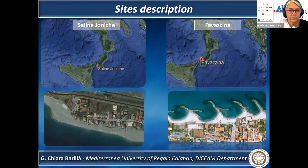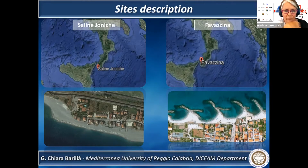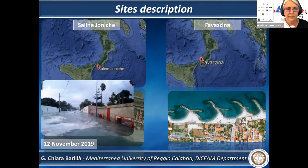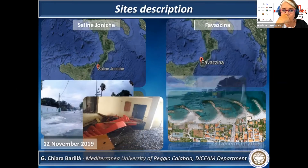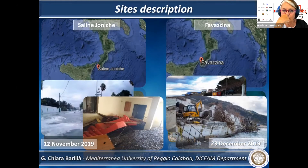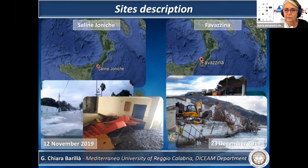The paper describes two case studies of coastal flooding occurred in November 2019 in Salina Ionica and in Favazzina, two towns located in the southern Ionian and Tyrrhenian Calabria respectively. In Salina Ionica, a violent sea storm flooded the streets and houses causing a lot of damages, and in Favazzina, another strong sea storm damaged the houses and coastal roads, destroying the beach, fundamental for summer tourism.